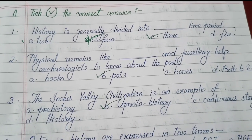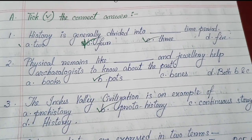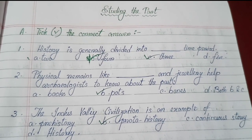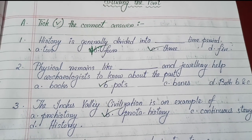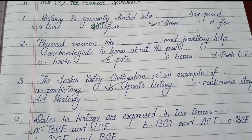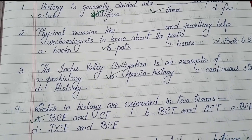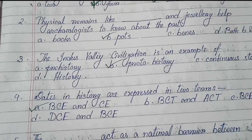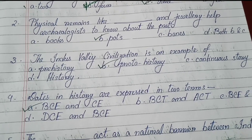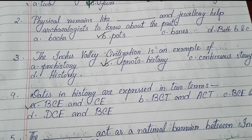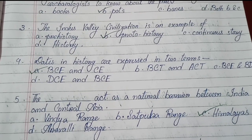Number two: Physical remains like — options are books, pots, bones, both B and C — answer is B: pots and jewelry help archaeologists to know about the past. Number three: The Indus Valley Civilization is an example of — options are prehistory, proto-history, continuous history, and history — the answer is B, proto-history.